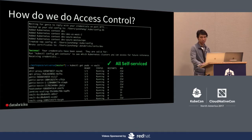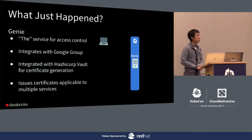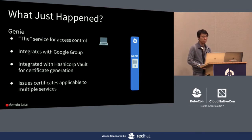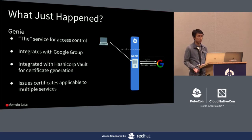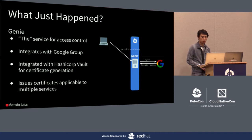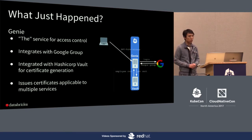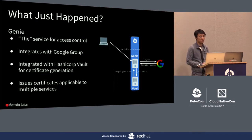Here's what's happening under the hood. Your laptop talks to a backend service called Genie — our centralized access control service inside Databricks. Genie is integrated with Google. There's a Genie OAuth proxy that forwards you to Google to complete authentication. After authentication, Genie sends another request to Google to get your Google group information. With all that information, it sends a request to HashiCorp Vault. Vault, upon receiving that information, issues an employee certificate and sends it back to your laptop. With that certificate, you can run your kubectl commands.